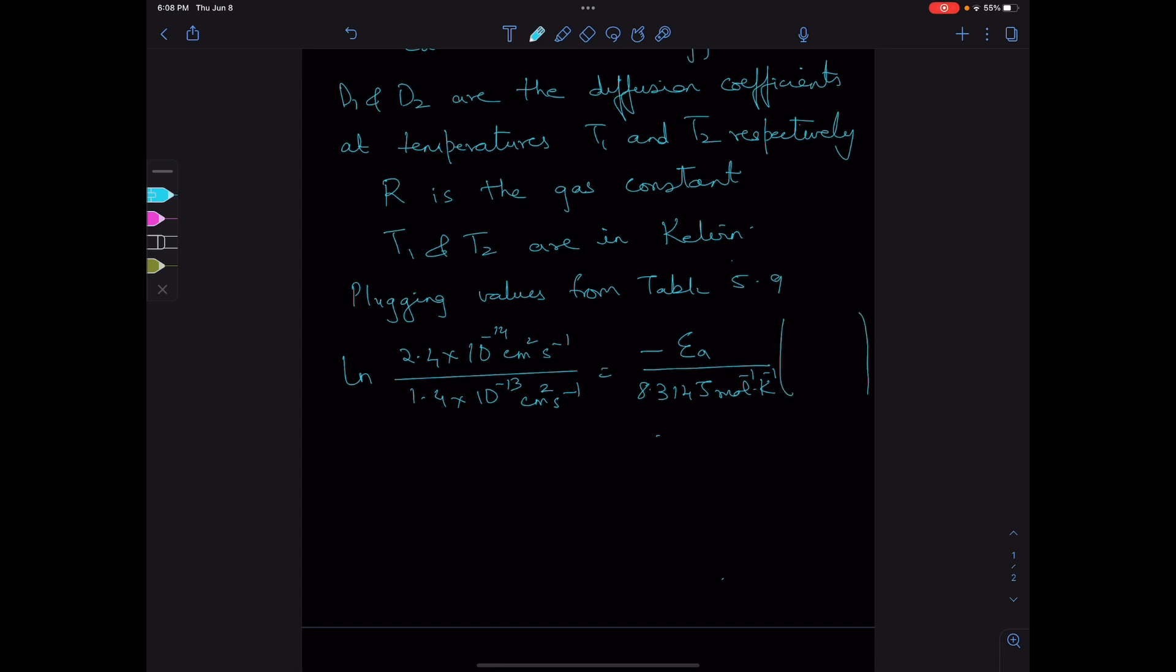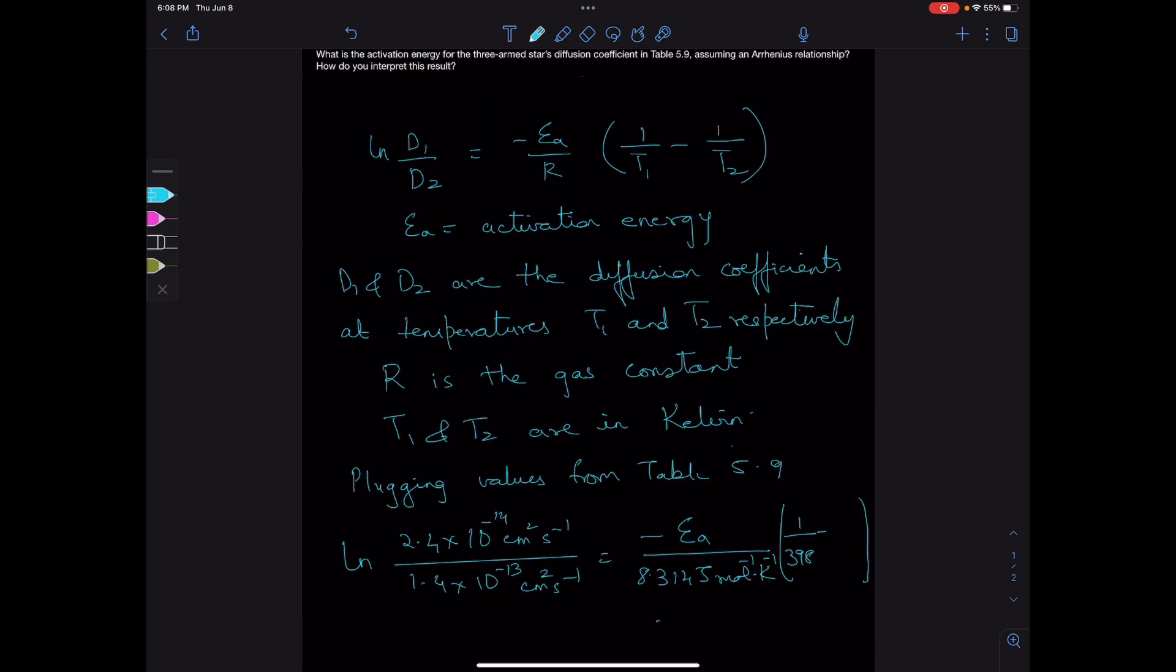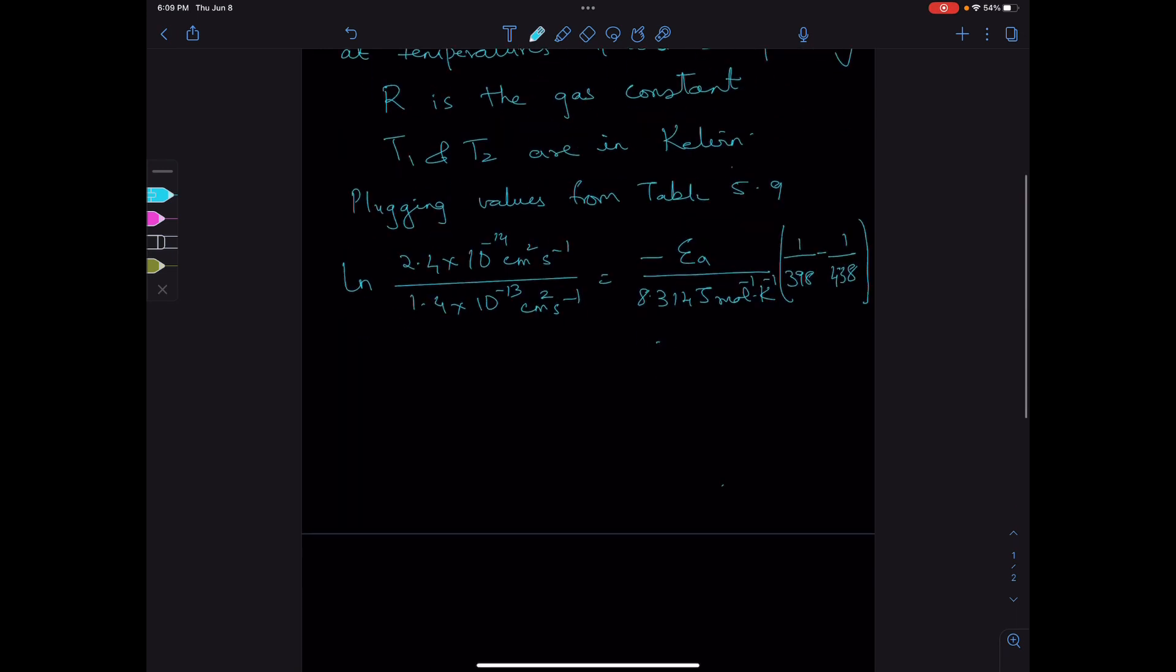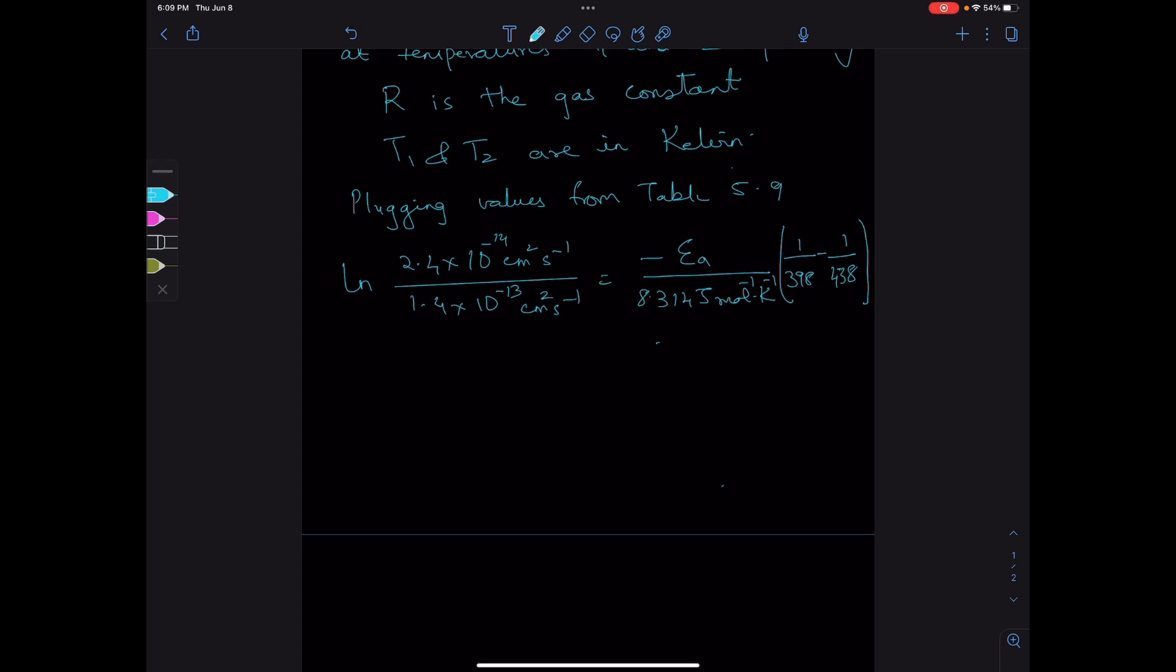The temperatures are 125°C which is 398 K, and 165°C which is 438 K. This gives us an Ea value of 73.163 kJ/mol.